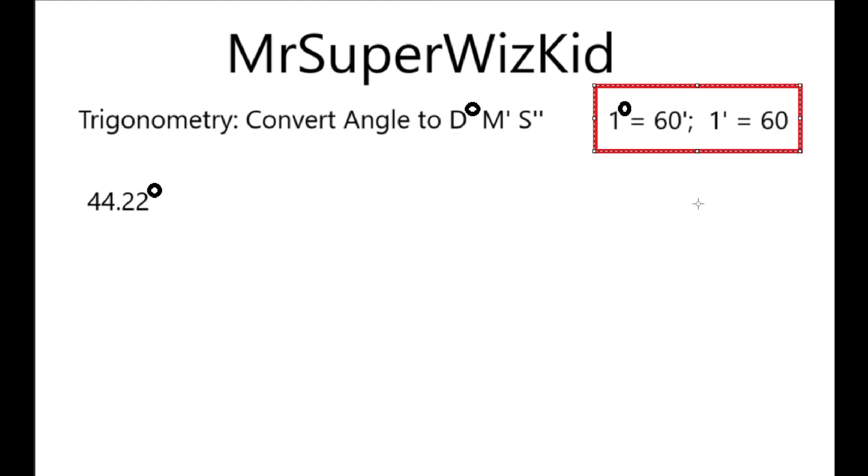So over here on the right, we have one degree is 60 minutes, and one minute is 60 seconds. To represent seconds, we use the two lines after the number. So, one degree equals 60 minutes, one minute equals 60 seconds in trigonometry.